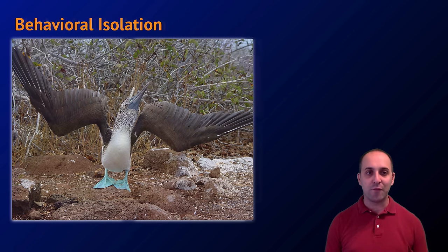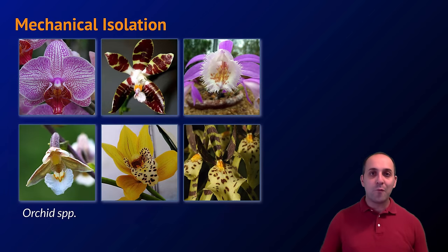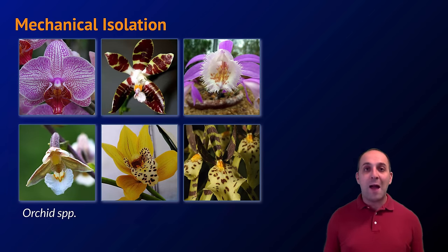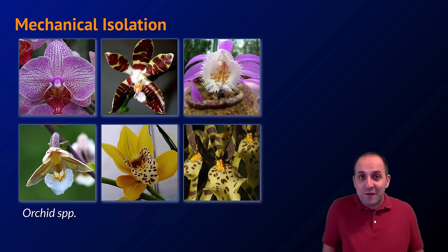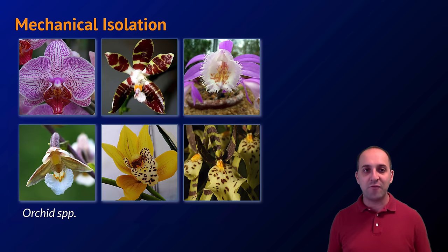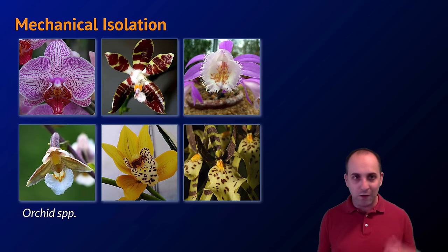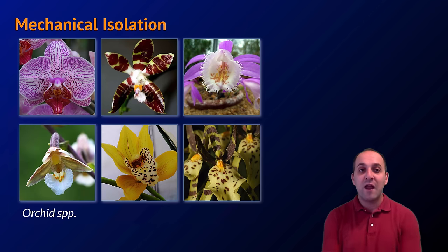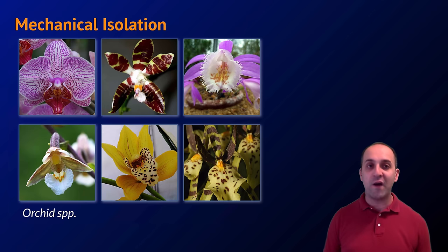Our next prezygotic barrier is mechanical isolation. In this situation, the reproductive apparatus of different organisms does not fit together or cannot come into contact with each other. It's probably pretty obvious when we consider something like a crayfish and an elephant. I'd also like to point out that we see this a lot in flowers — each of these flowers has adapted to attract a different pollinator, so they're effectively mechanically isolated because they use different pollinators.